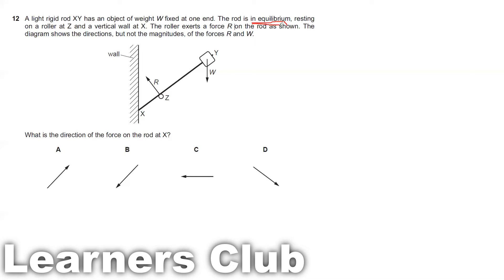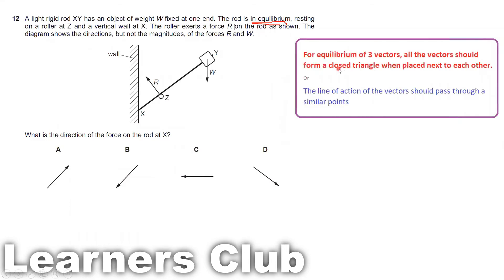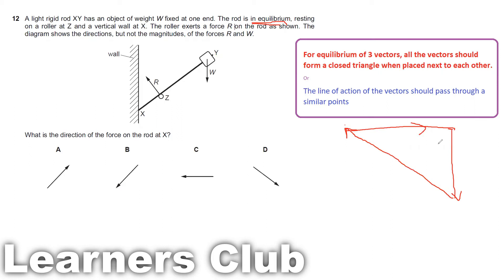The object is in equilibrium, so we can use the principle that if an object is in equilibrium with three forces, all three vectors form a closed triangle in the same order. Alternatively, the lines of action of all three forces must pass through a single common point. We find the intersection of the lines of action of the two known forces.